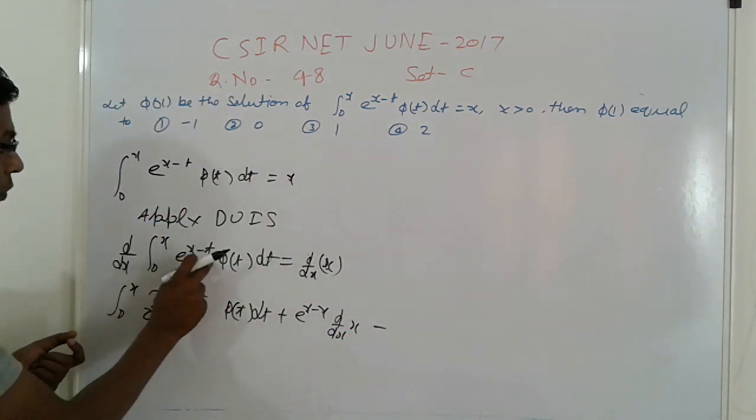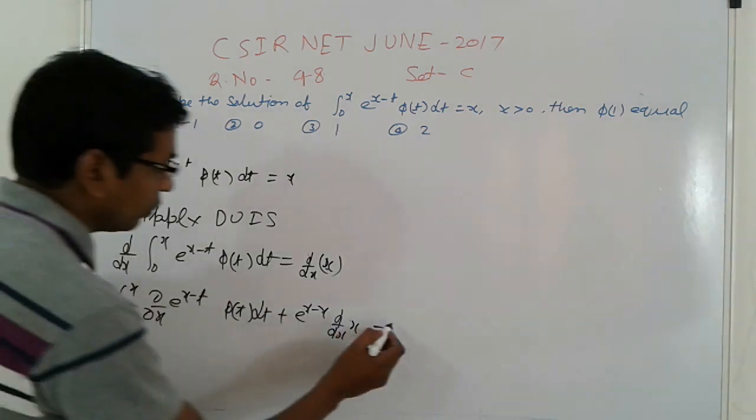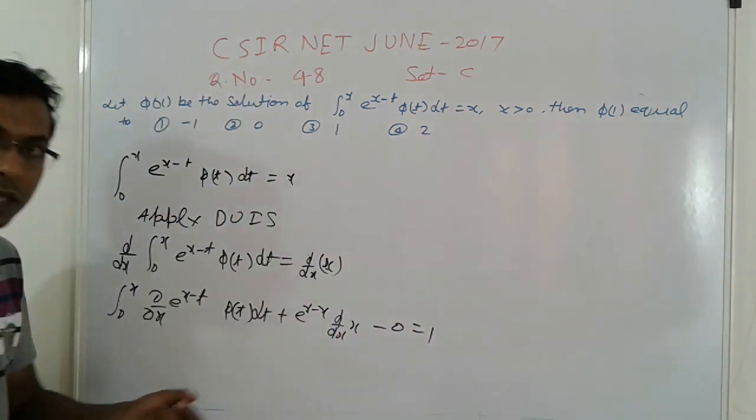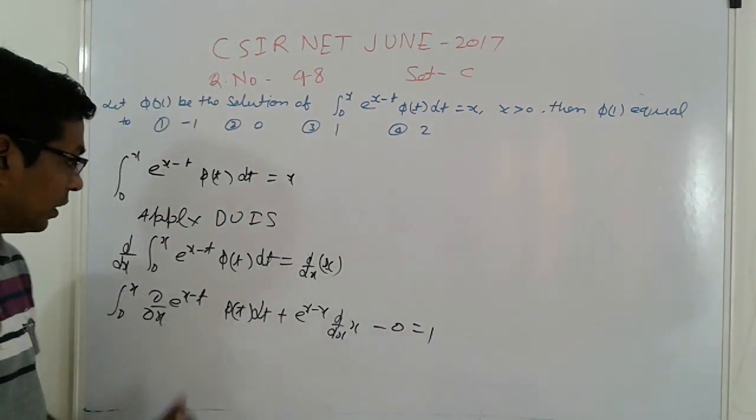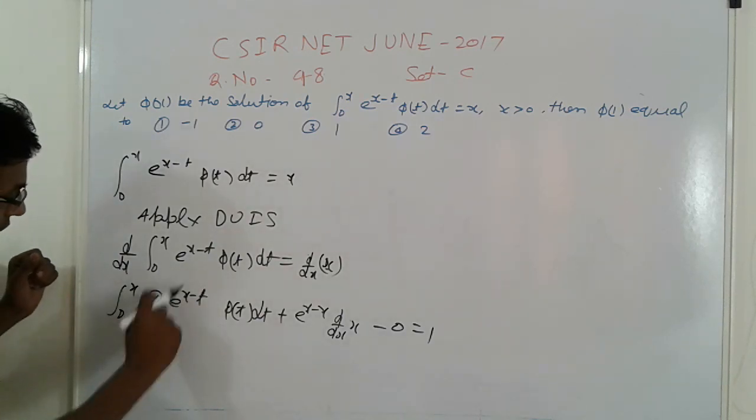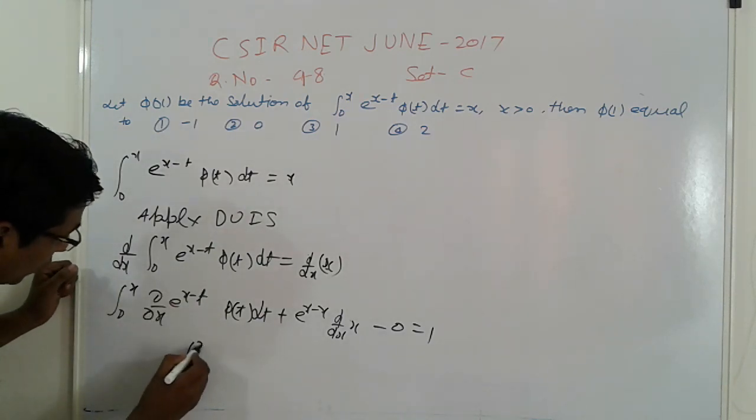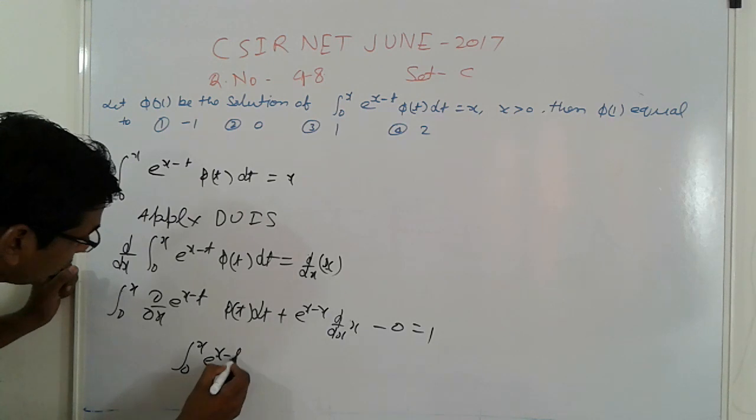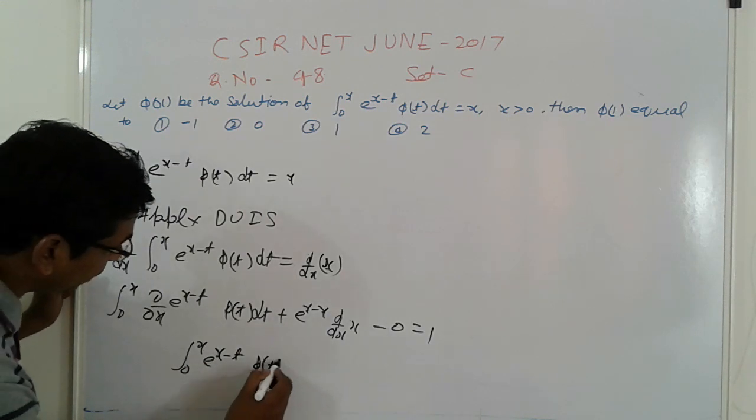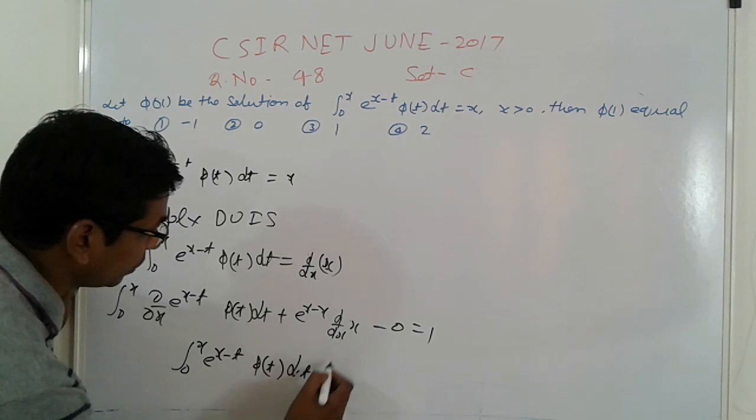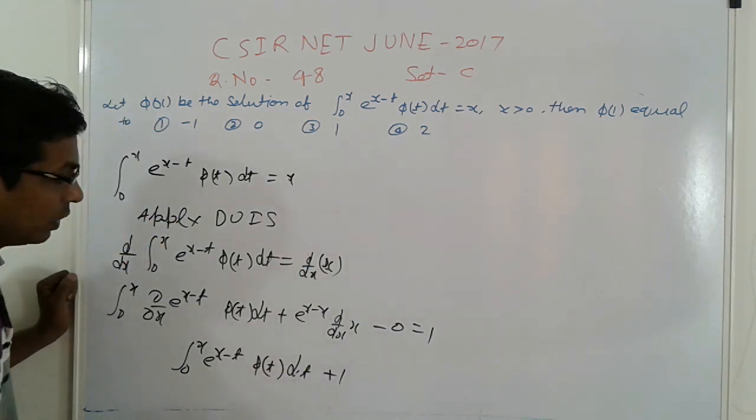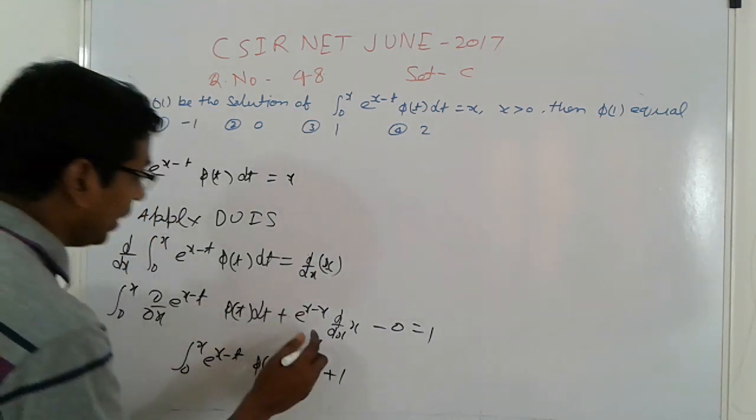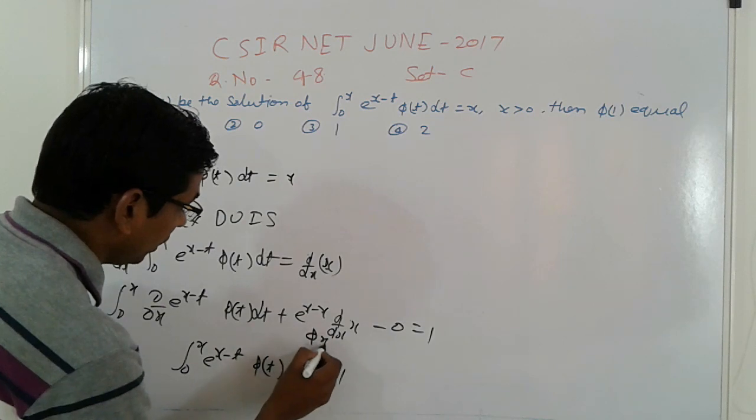So e^0 φ(x) minus the value at the lower integral, which is zero. This gives us φ(x) plus ∫₀ˣ e^(x-t) φ(t) dt = 1. This is the property using DUIS and simplification.